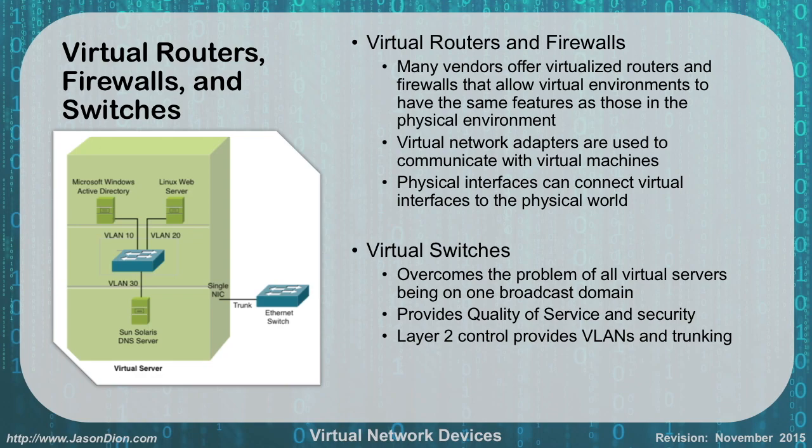Layer 2 gives us control of VLANs and trunking. Layer 3 gives us the ability to do routing between these as well, along with quality of service and security. Remember though, once you have all of these things tied together, you still have to get to the physical world somehow. That single NIC and that trunk on that Ethernet switch is our physical connection outside of this hardware to the three virtual systems inside of it.